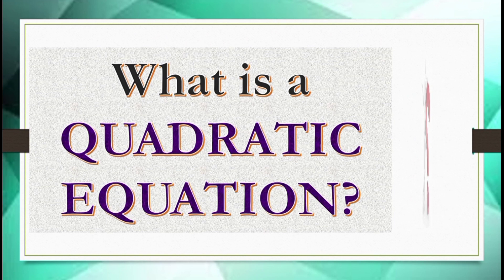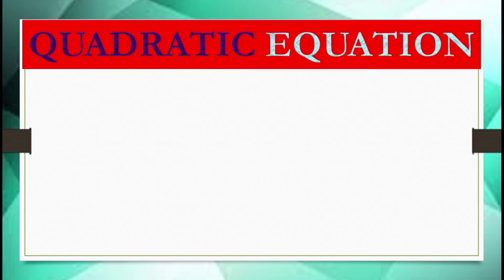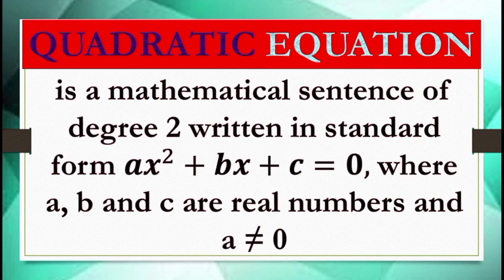So to start with, what is a quadratic equation? A quadratic equation is defined as a mathematical sentence of degree 2 written in standard form — ax² plus bx plus c equals 0 — where a, b, and c are real numbers and a is not equal to 0.